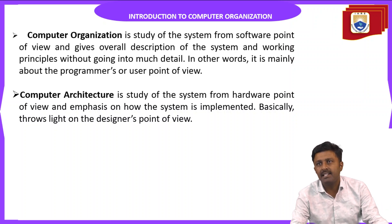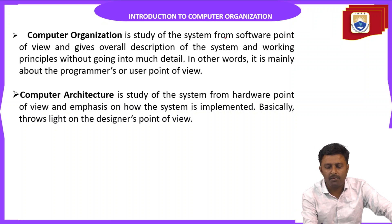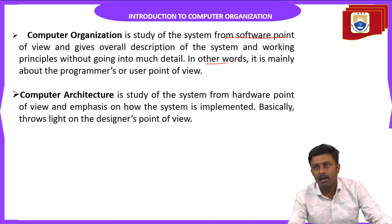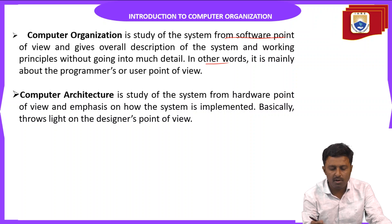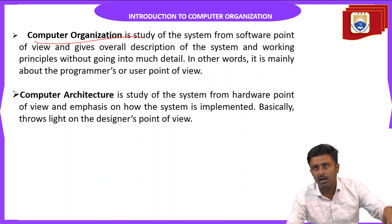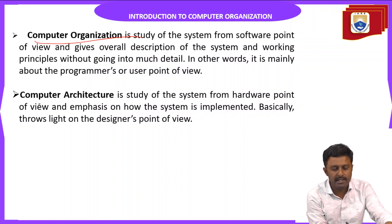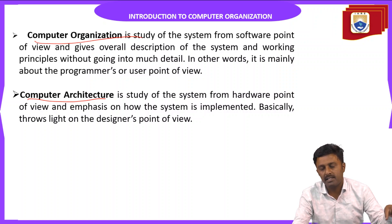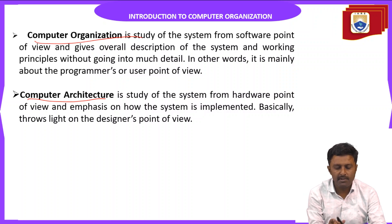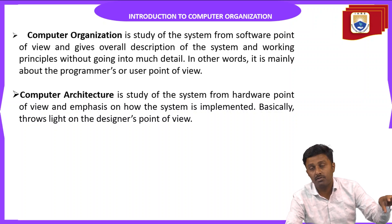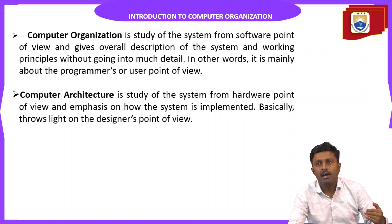Computer organization is the study of the system from a software point of view — an overall description of the system and working principles without going into implementation detail. In other words, it is the programmer's point of view. Computer architecture, on the other hand, is the study of the system from a hardware point of view, emphasizing how the system is implemented physically.